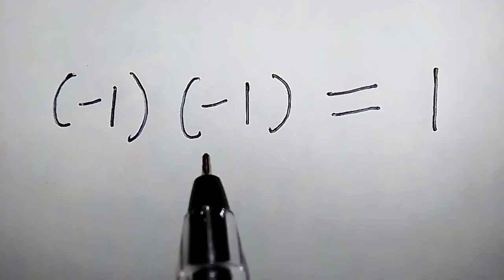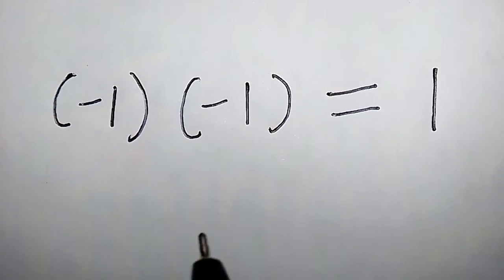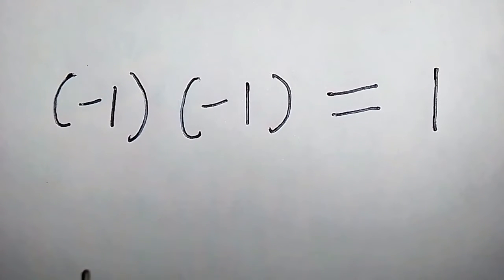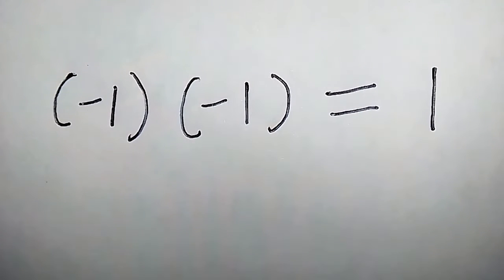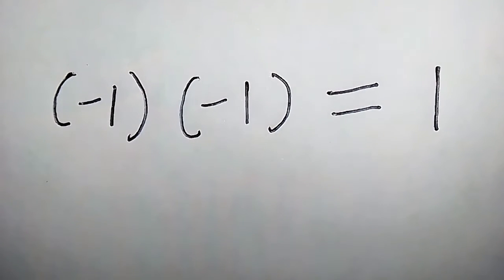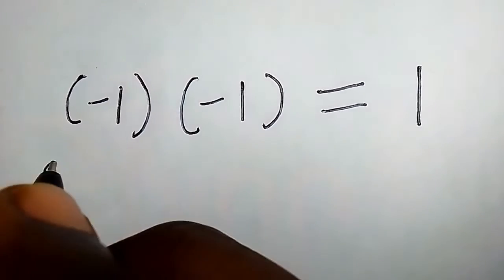Negative 1 times negative 1 equals 1. Obviously this mathematical statement is true, but how do we prove this? Without any further delay, let's begin the proof.